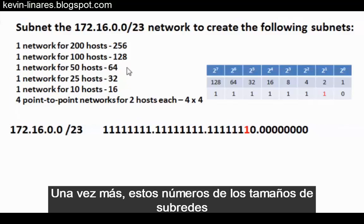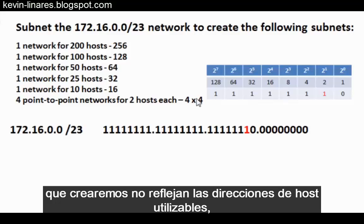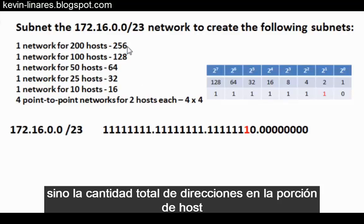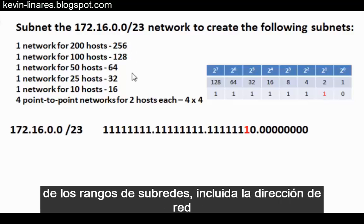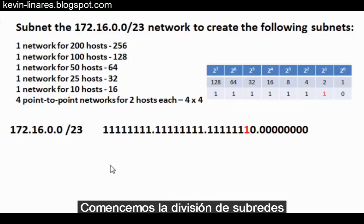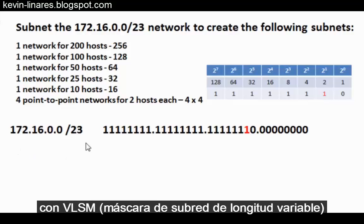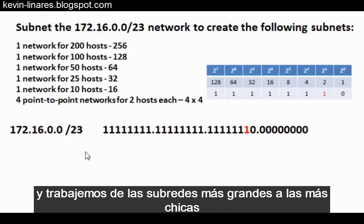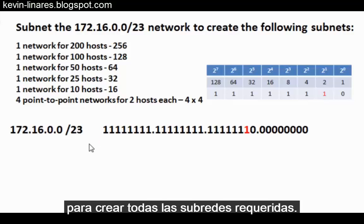Once again, these numbers for the subnet sizes do not reflect the usable host addresses, but the total number of addresses in the host portion of the subnet ranges, including the network address and the broadcast address. So let's get started subnetting this network using VLSM — variable length subnet masks — working from largest subnets to smallest subnets in order to create all of the subnets required.